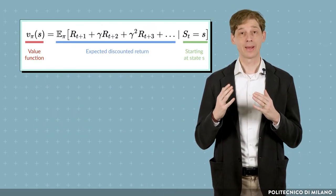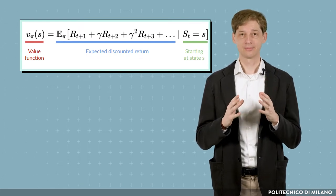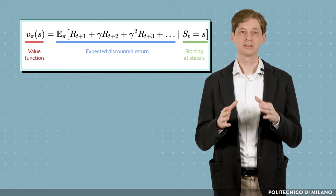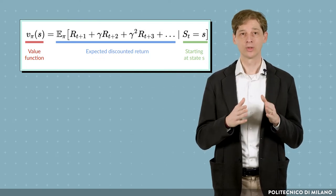its value function v_π is a function that for each state s specifies the expected discounted reward that can be obtained starting from state s and following the policy π.